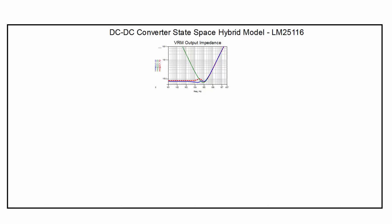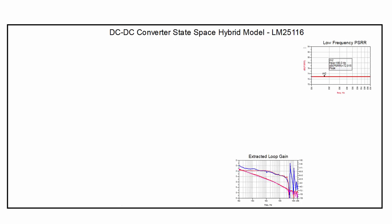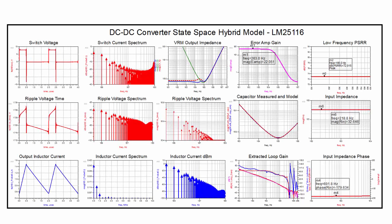AC displays show the output impedance, key to the power distribution network, and input impedance, important for input filter stability. AC displays are also shown for the control loop Bode plot and the input power supply rejection ratio, or PSRR. PSRR is the ability to attenuate incoming ripple and transients from the DC-to-DC converter output.